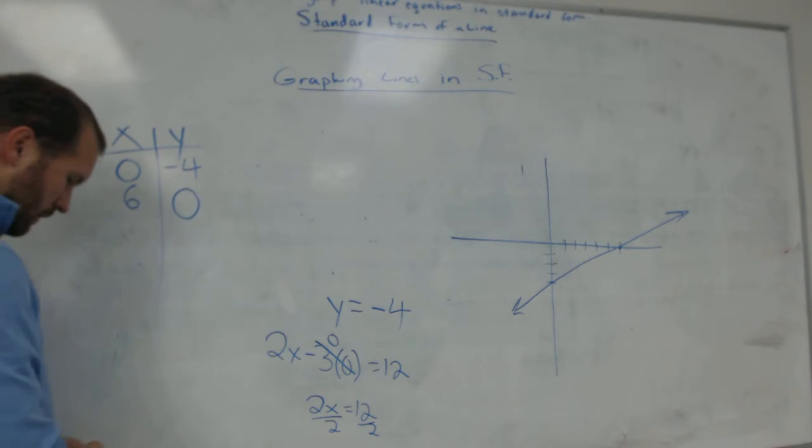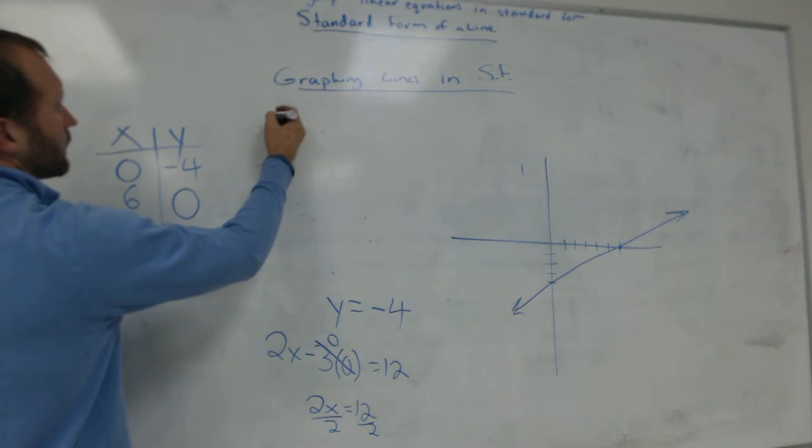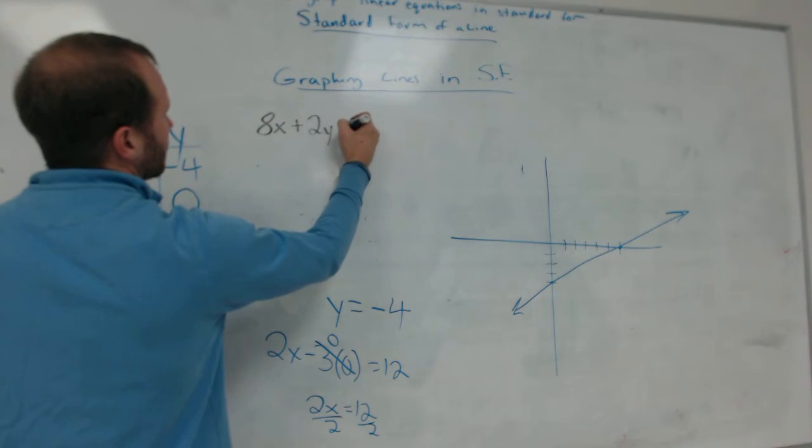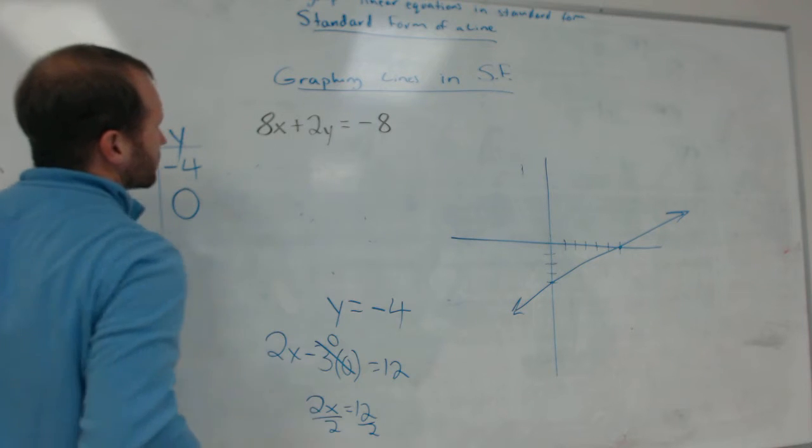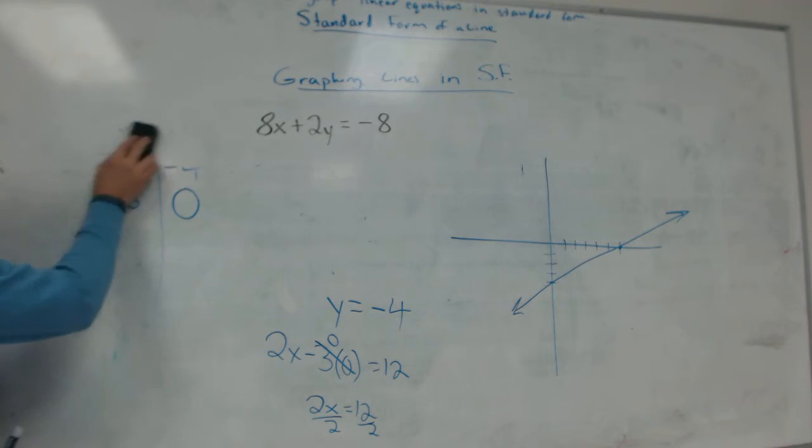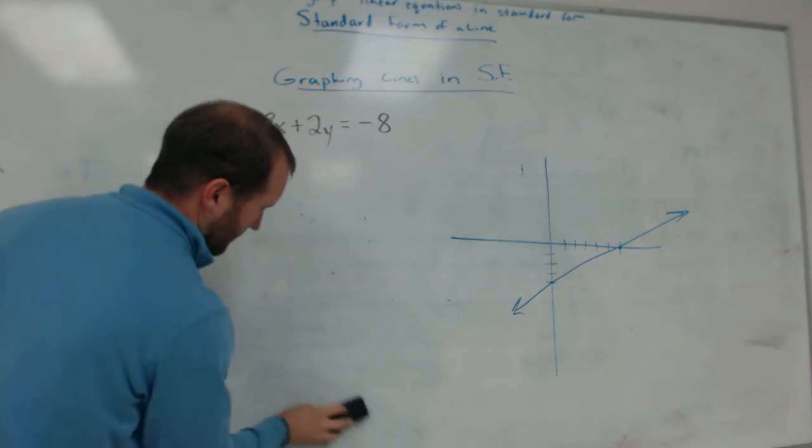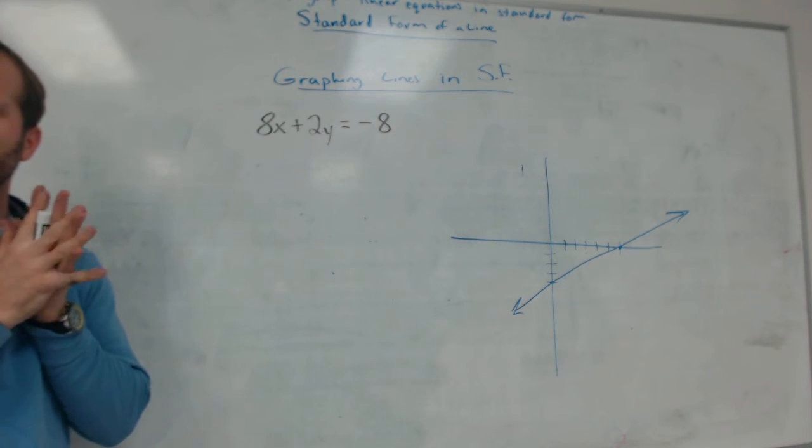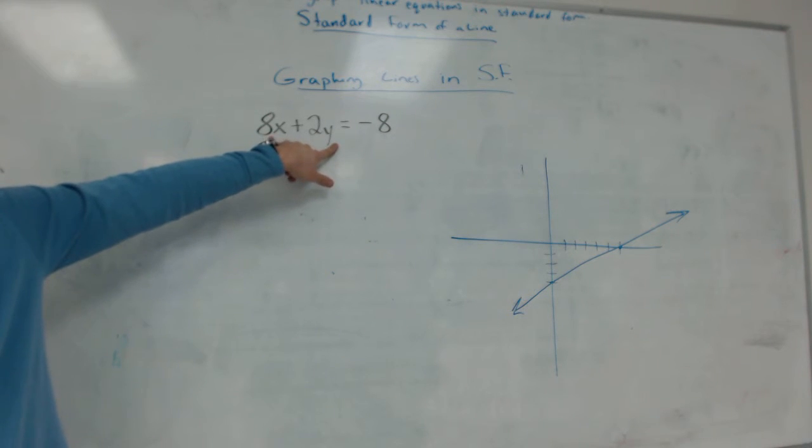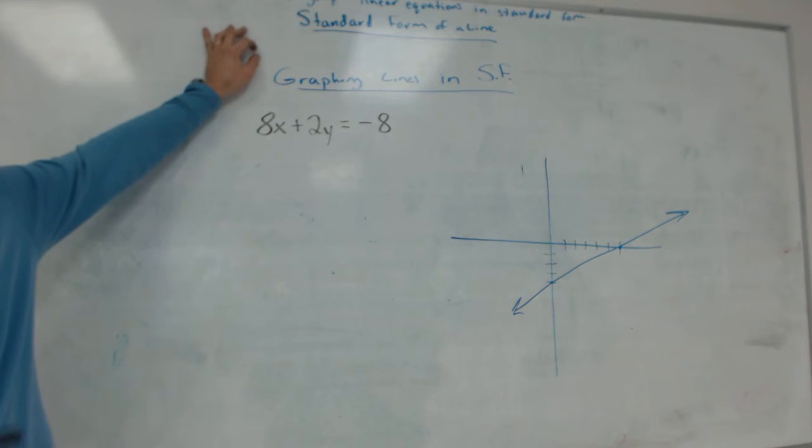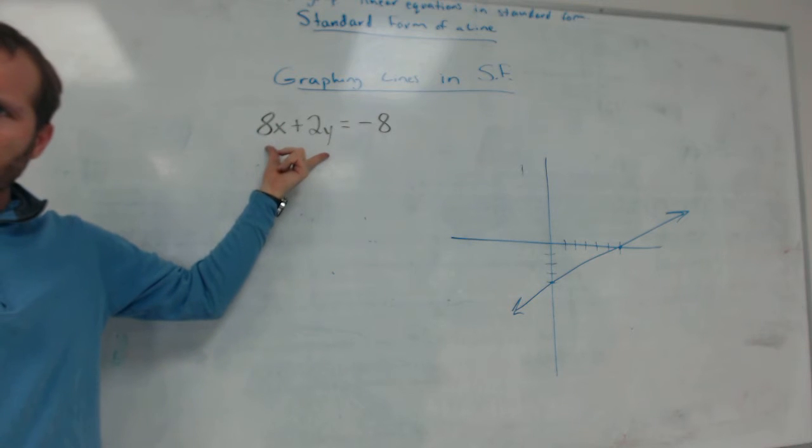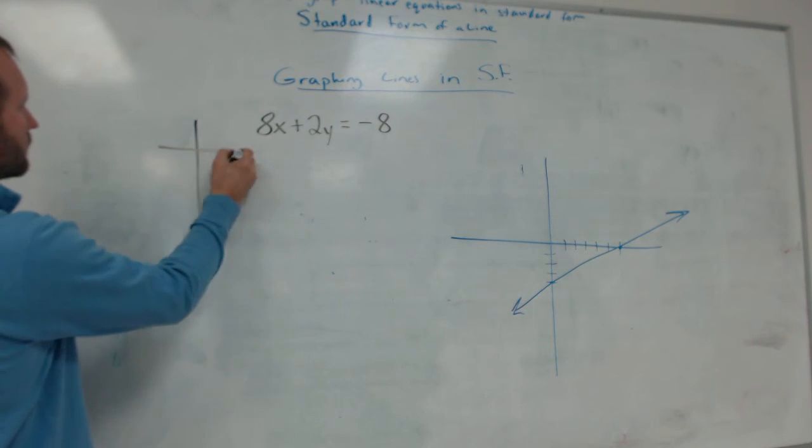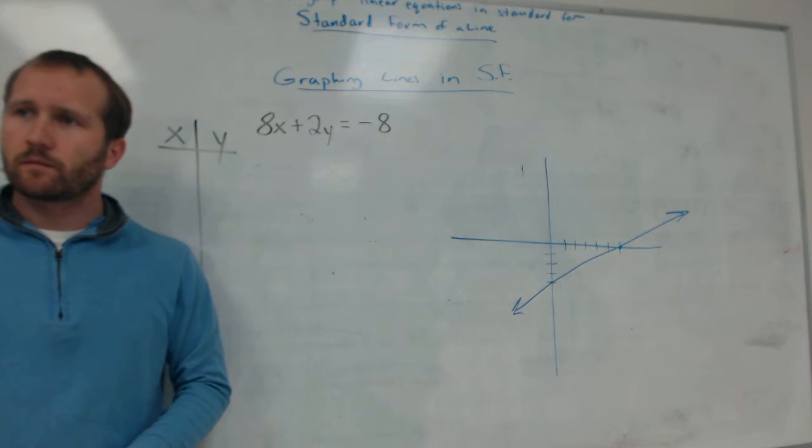Let's do one more example. What happens if I had something like this? 8X plus 2y equals negative 8. Is this in the standard form? Yeah. How do I know? Because it's a y. Yeah, the key here is x and y are on the same side, right? So just like slope-intercept form was always y equals, standard form is x and y on the same side. Alright, so it's in standard form, so I make a T-chart. On your homework tonight, all of the problems will be in standard form. Standard form.